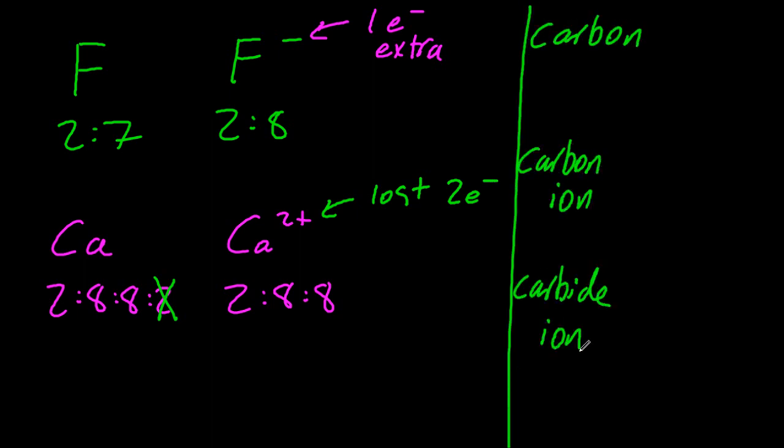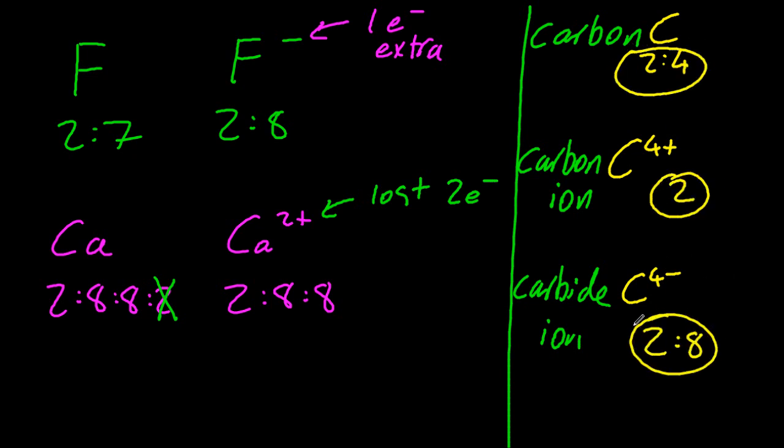And the only tricky one is kind of carbon. So carbon has six electrons. And the carbon ion, well, that's lost four. So it's only got two left. And carbide, it's negative 2-8.